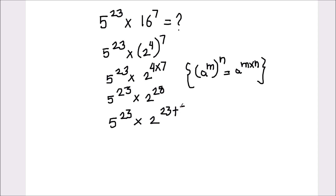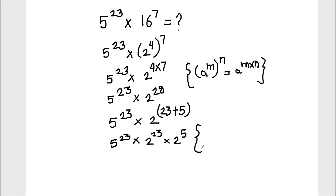We can write 2 raised to power 28 as 2 raised to power 23 plus 5, because we have 5 raised to power 23 here, so we are breaking 28 into 23 and 5. Here we have used the law of exponents which says a raised to power m times a raised to power n equals a raised to power m plus n.